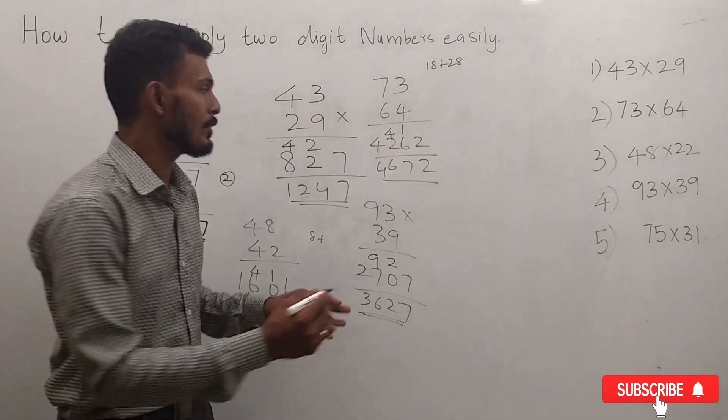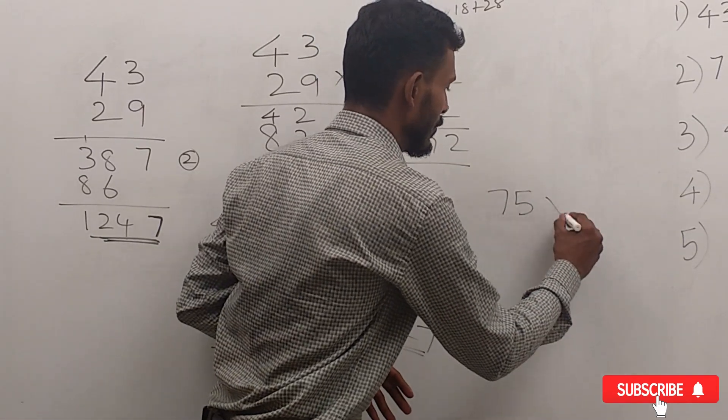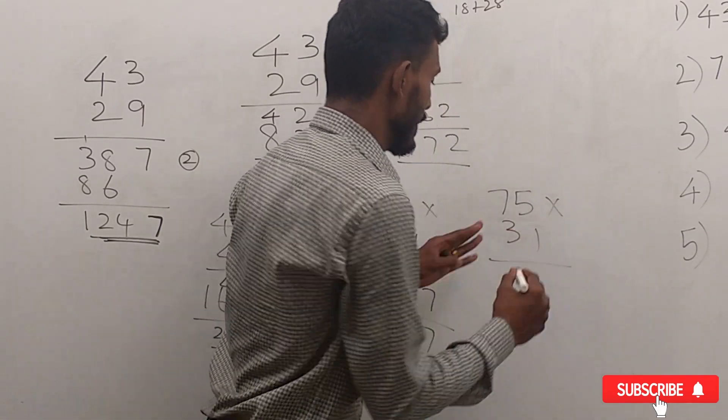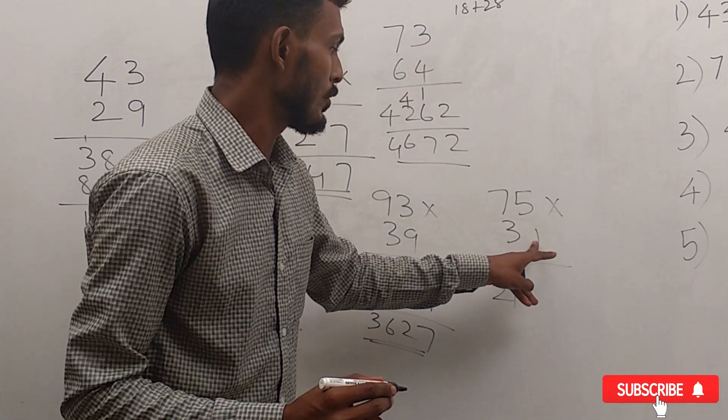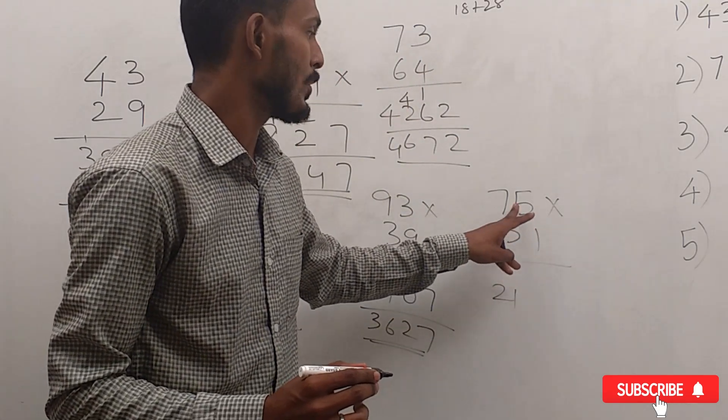In case of 75 × 31, we have 3 × 7 = 21. 7 × 1 = 7, plus 3 × 5 = 15, which gives us 22.